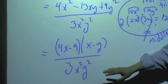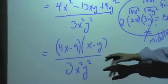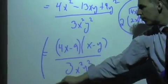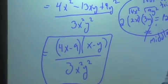There's nothing that simplifies, so this is the final answer. It's a simplified form. It's factored on the top, and it's the lowest possible denominator.